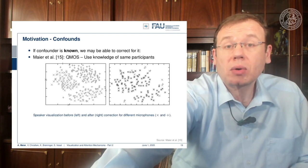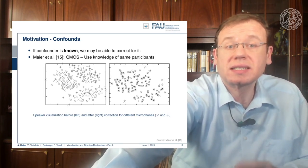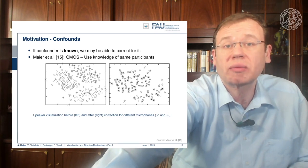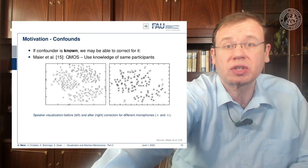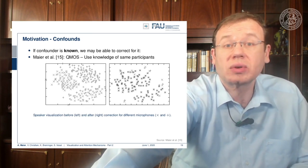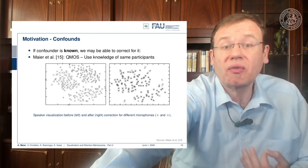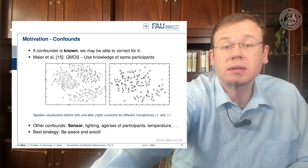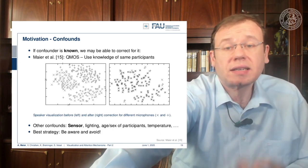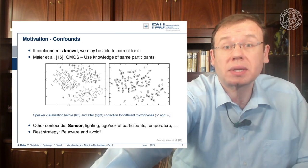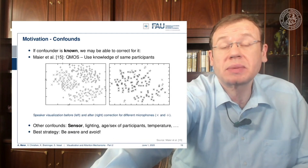We have proposed a technique to counter confounders, which you find in reference number 15. The idea is that you actively include the information about the confounder and try to suppress it in the visualization. You can show that you can actually remove the bias introduced by microphones, for example. You have to be aware that confounders might be sensors, lighting conditions, age, gender of participants, or temperature — even temperature is likely to produce an influence on sensory machinery. If you have confounders in the data you have to compensate for them or try to avoid them in your data collection.